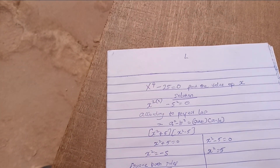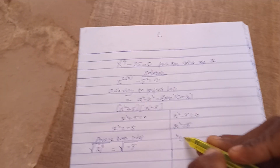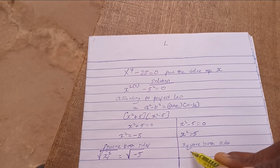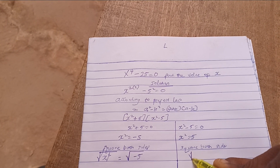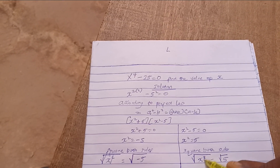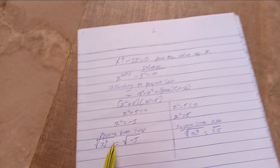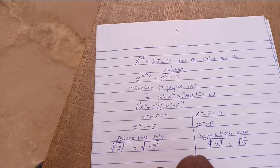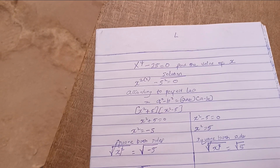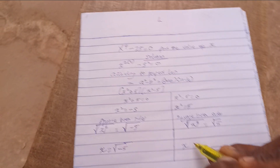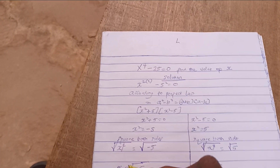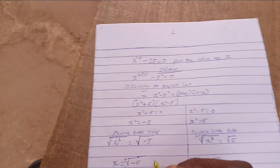Squaring both sides, the square cancels on the left. From x squared equals negative 5, we get x equals the square root of negative 5. From x squared equals 5, we get x equals the square root of 5. Don't forget the plus or minus.